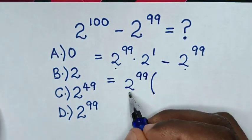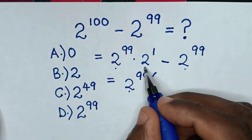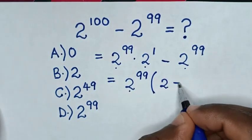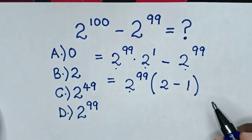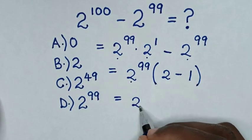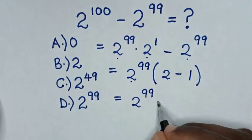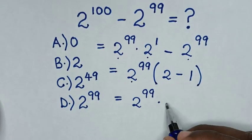Then this divided by this is 2^1, whereas 2^1 is same as 2, minus this divided by this is 1 bracket. Then is equal to 2^99 times 2 minus 1 is 1.